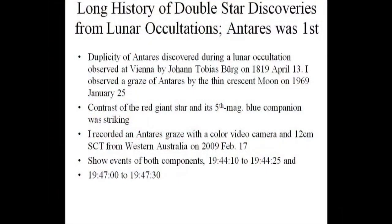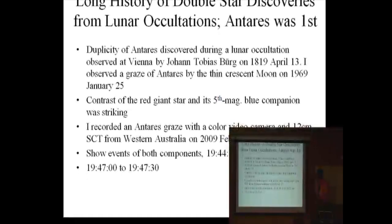There's a long history of double star discoveries from lunar occultations. Antares was the first, observed in 1819. Then in 1969, I happened to observe a graze of Antares by the thin crescent moon on the dark side of the moon. It was really fantastic to see the red giant star and then the fifth magnitude blue companion contrast, where you could see the blue companion for quite some time.